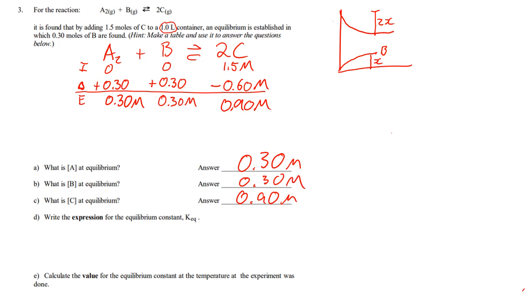My KEQ expression is going to be C squared, because of the 2 coefficient in front, over A and B. Or, in other words, calculate the KEQ, which is this one down here. KEQ equals 0.90 squared over 0.30 times 0.30. So, if I plug that into my calculator, it would be 0.9 squared divided by 0.3 divided by 0.3 equals, KEQ equals 9.